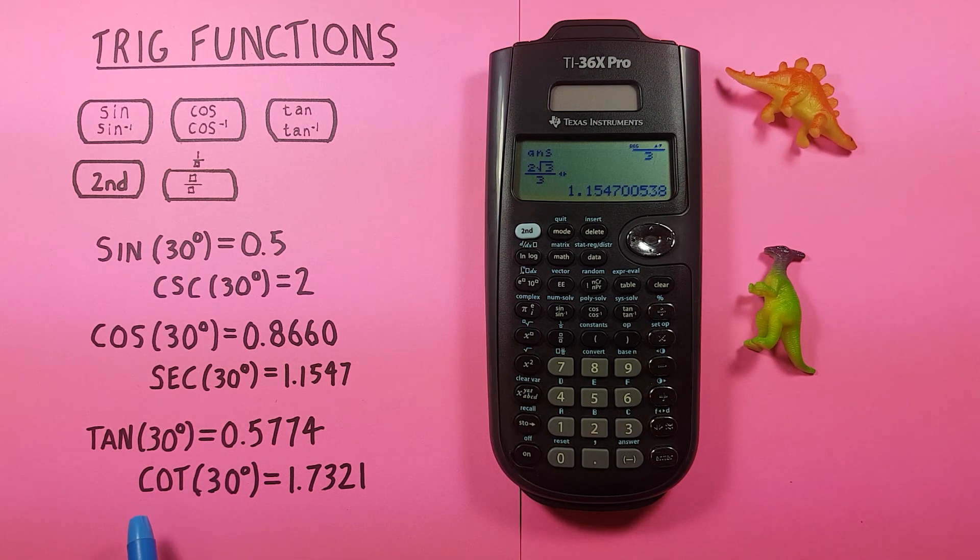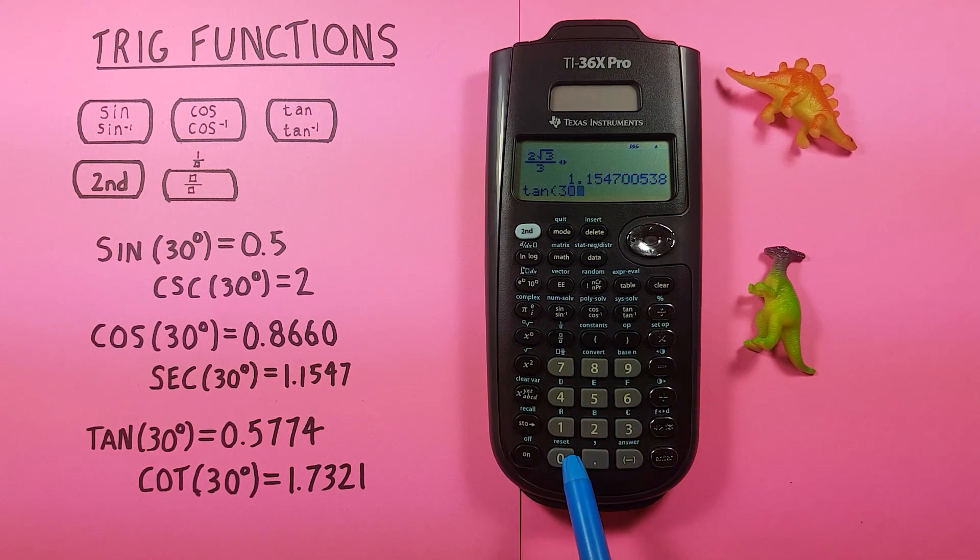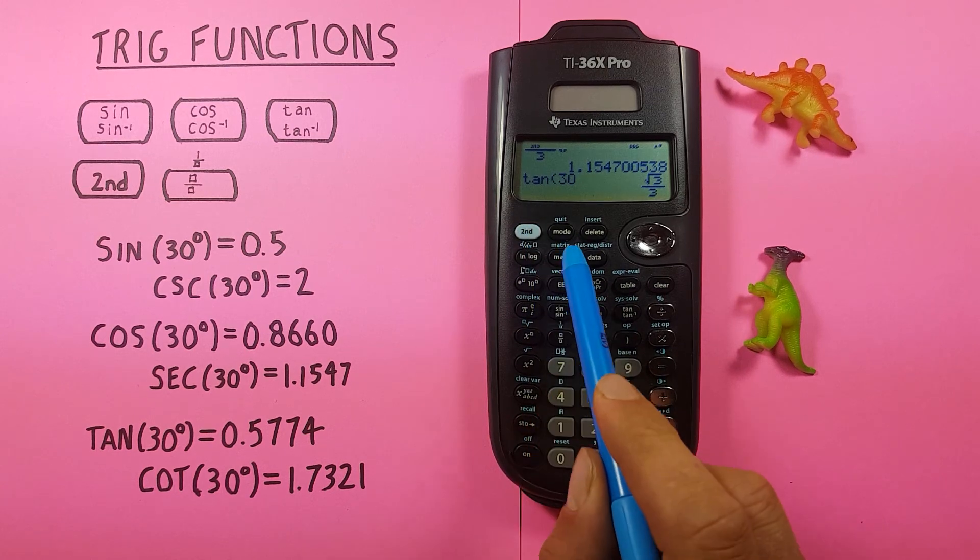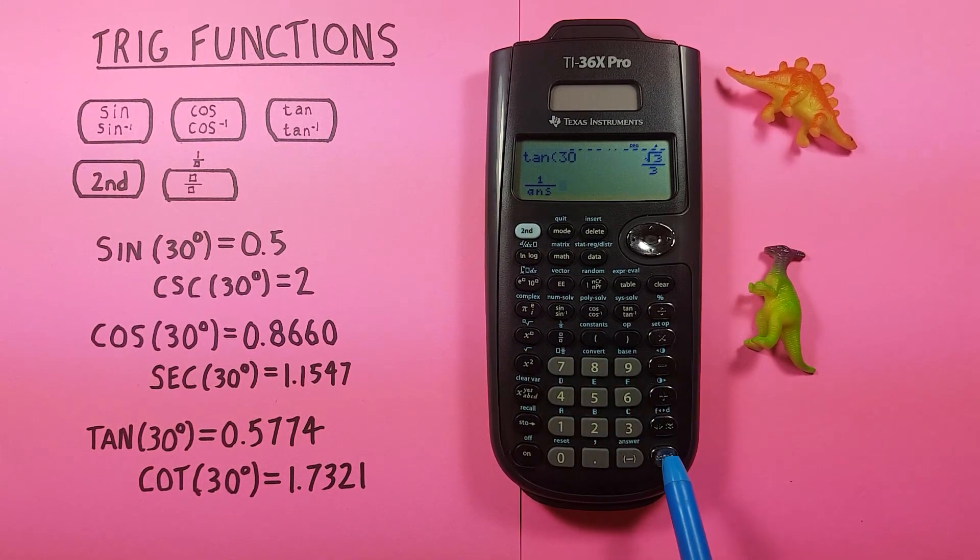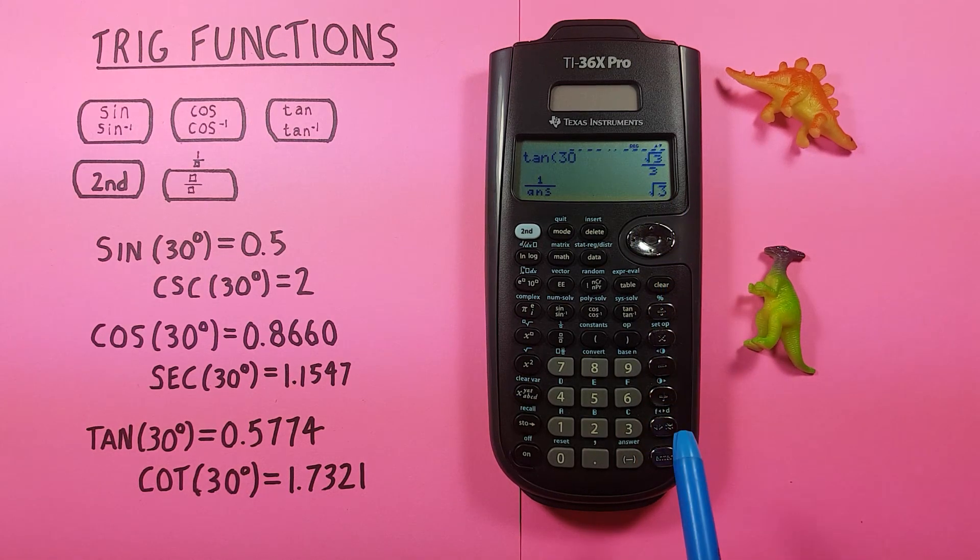And for cotangent we use tan. So we go tan, 30, enter, second function, inverse, enter. There's our fraction, and again convert to decimals we have 1.7320.